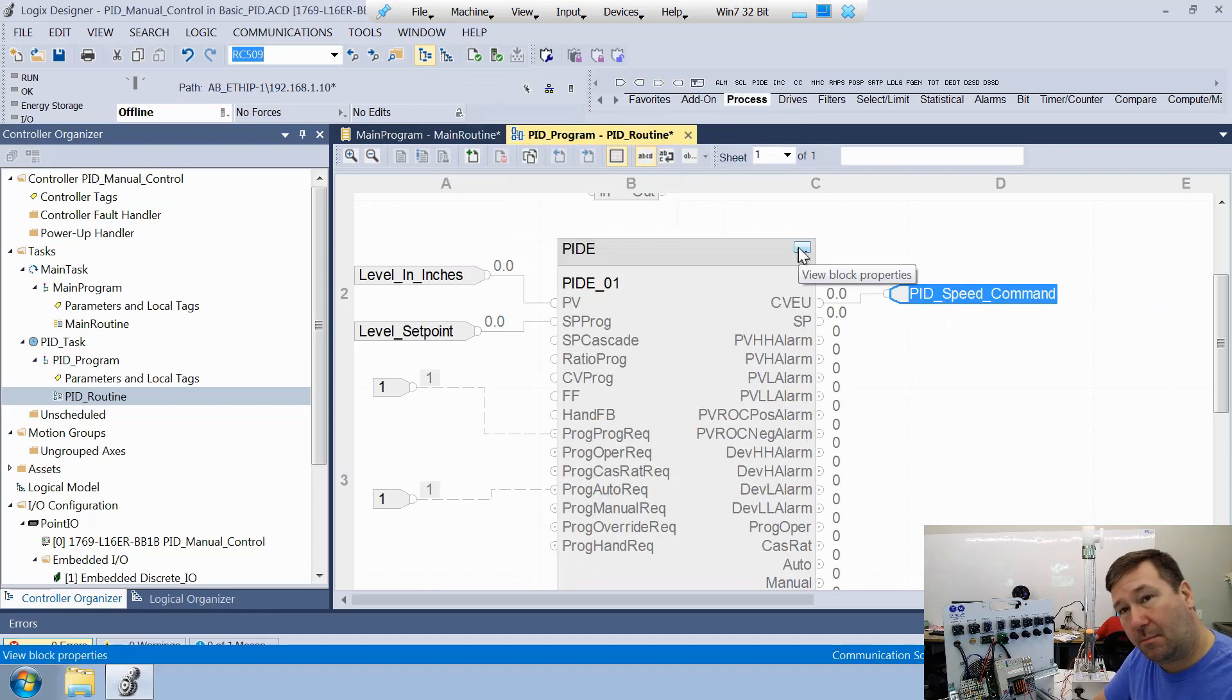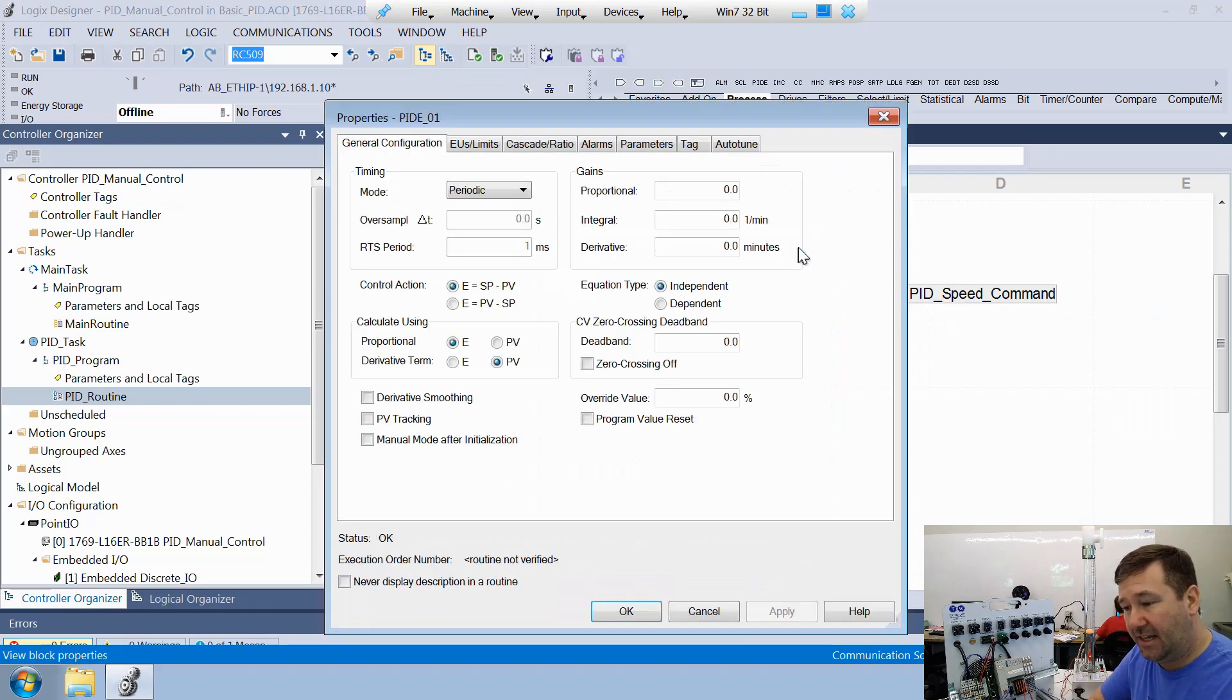And then we're going to view the block properties of our PID. And just for starting point, we do need to have something in this proportional and integral. So I'm just going to put a one in the proportional and I'm going to put a 0.1 in the integral. And then for our equation type, we're going to use the dependent variable equation. We'll actually have some videos later using the independent variable equation.